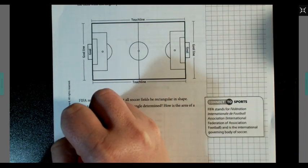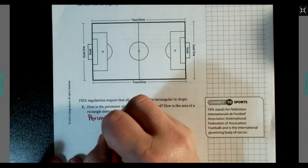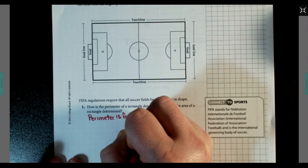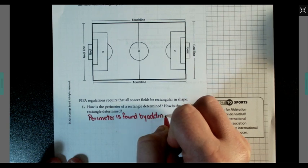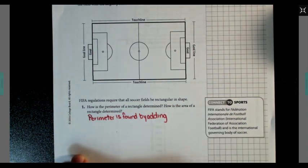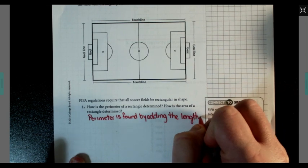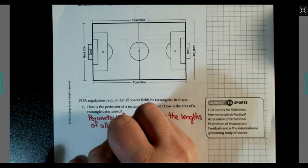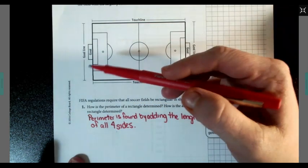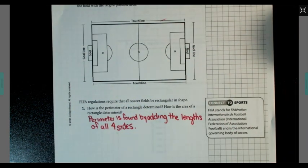Well, perimeter when dealing with a rectangle is found by adding the measurements or the lengths of all four sides. So that means the goal line plus the touchline plus the goal line plus the touchline all added together.